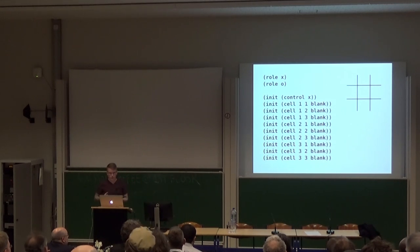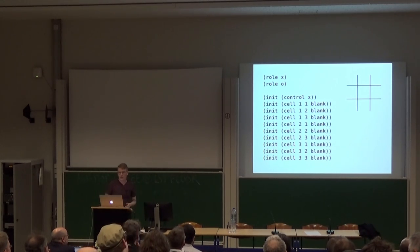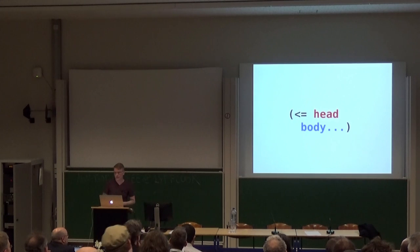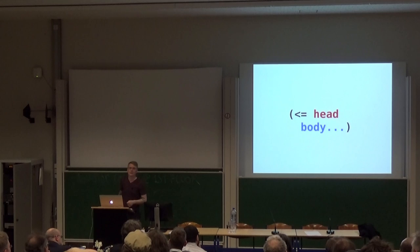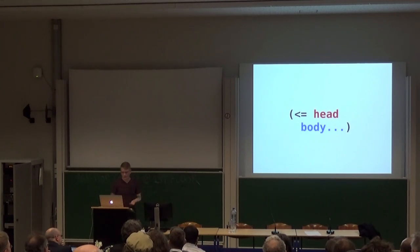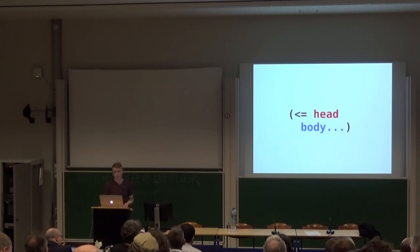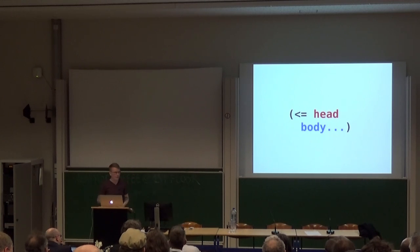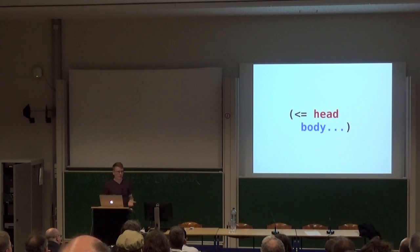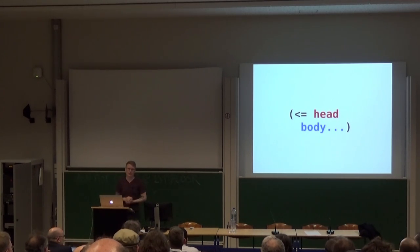To do some interesting things with states, we need a way to do rules. In GDL, the logical inference or rule operator is the less-than-or-equal-to operator — I think it's supposed to look like an ASCII art arrow. So this is a rule, and it has a head and then zero or more body clauses. The head is true if everything in the body is true. If you're a logic programming person, you get this. Don't worry too much if you've never done logic programming — after the next few minutes you don't have to think about it again if you don't want to.